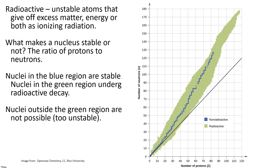Radioactive refers to unstable atoms that give off excess matter, energy, or both as ionizing radiation. So what makes a nucleus stable or not? It is the ratio of protons to neutrons.